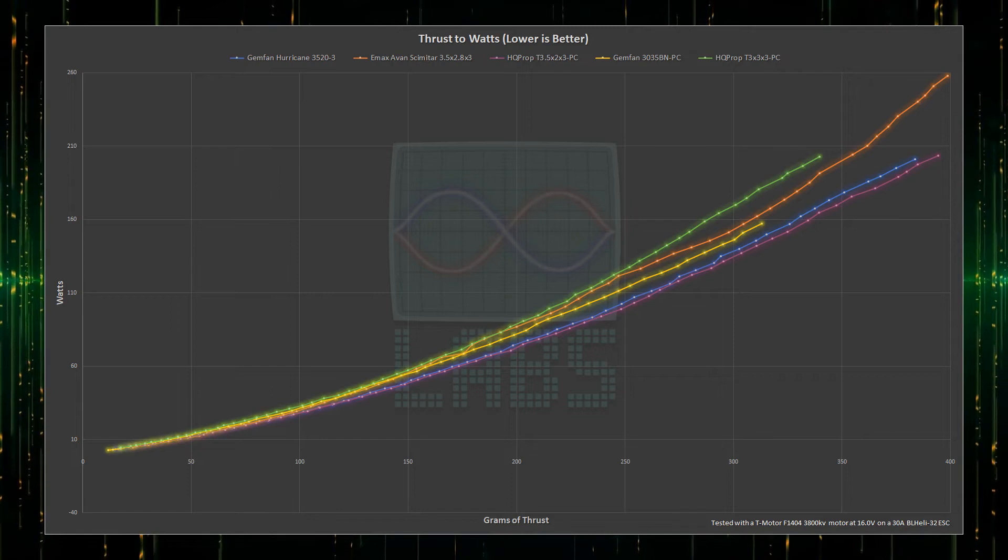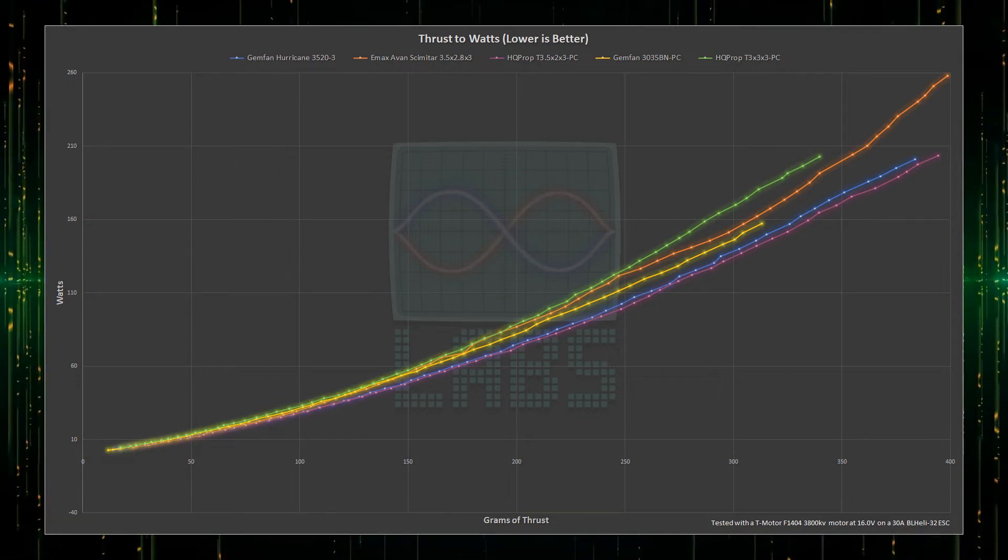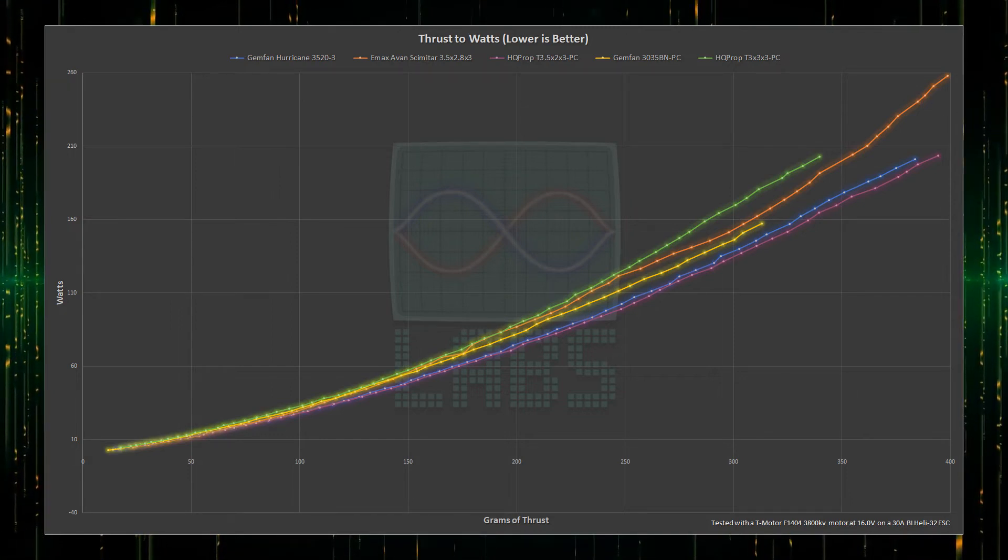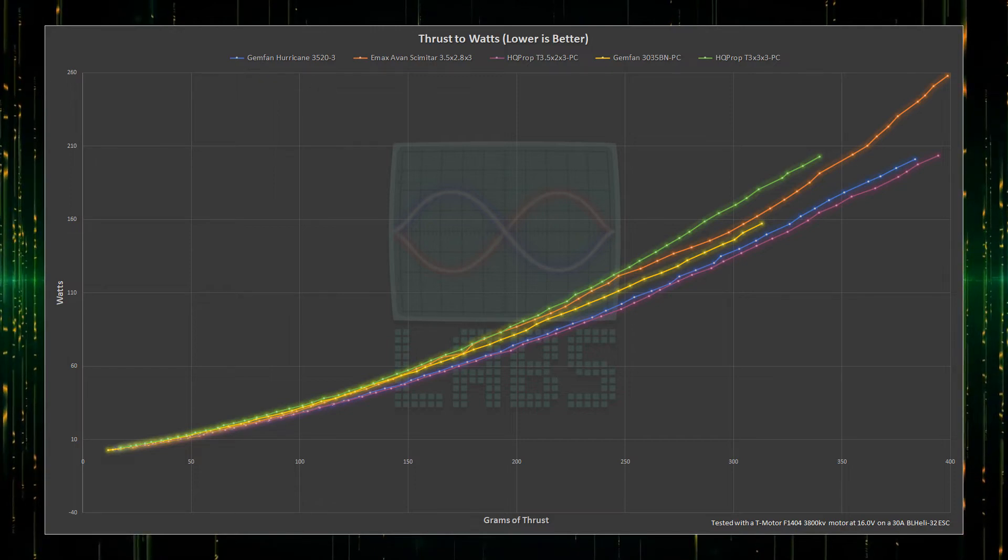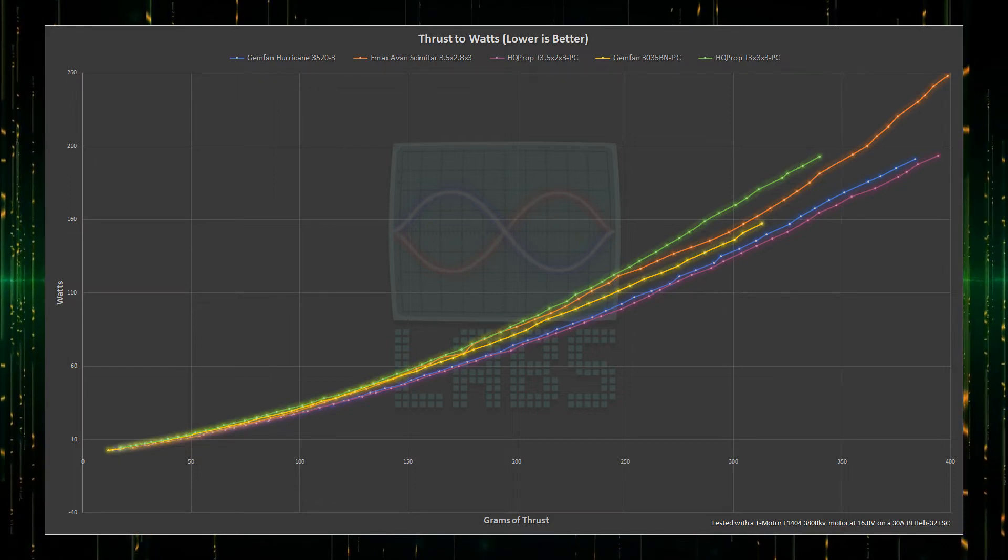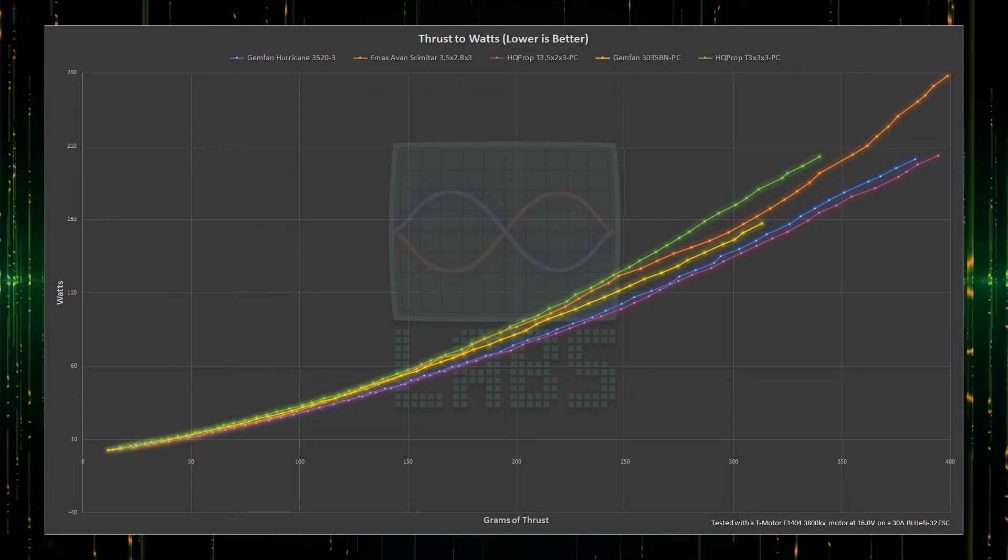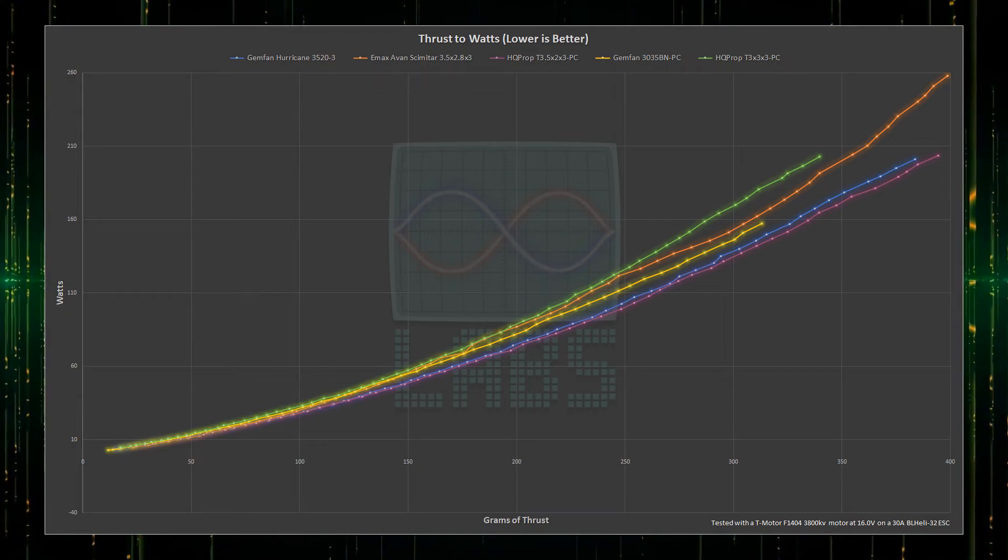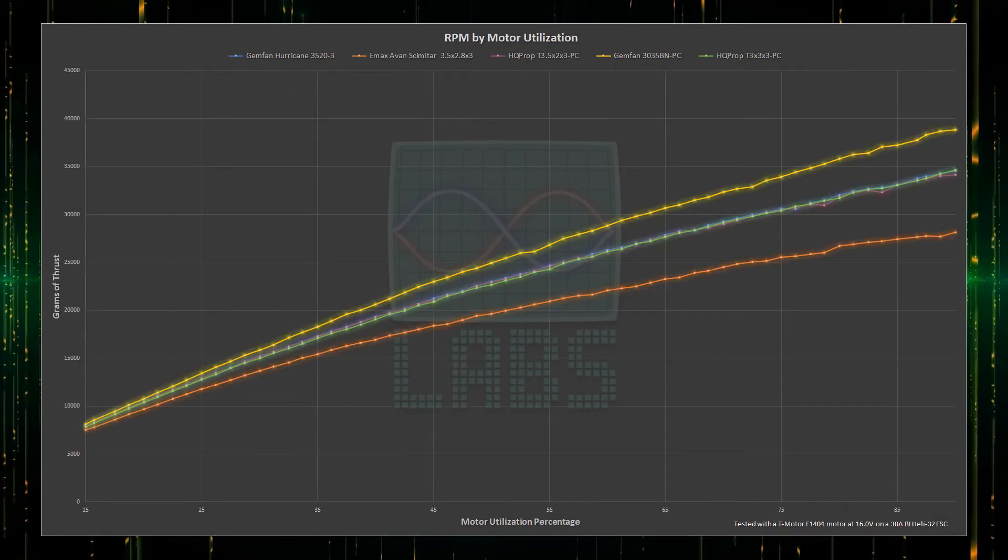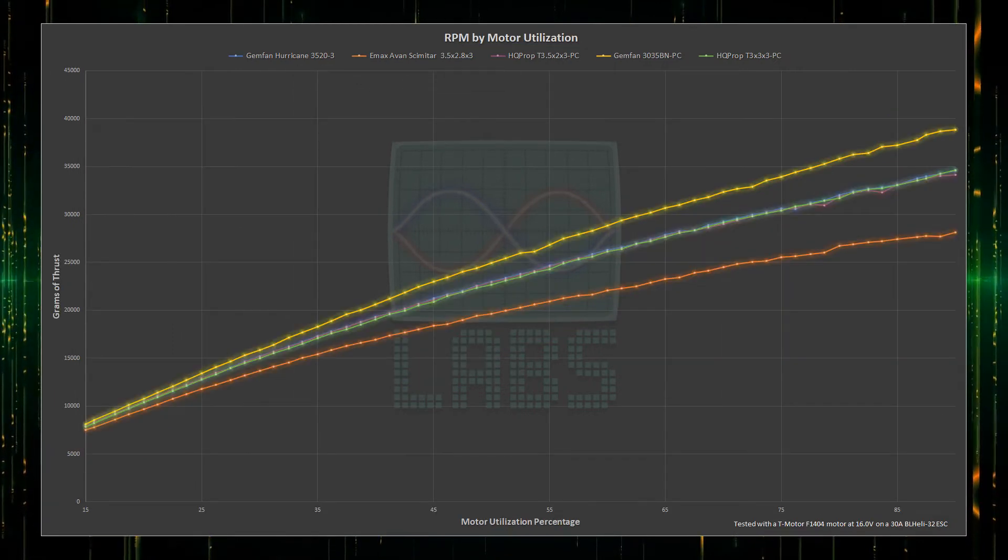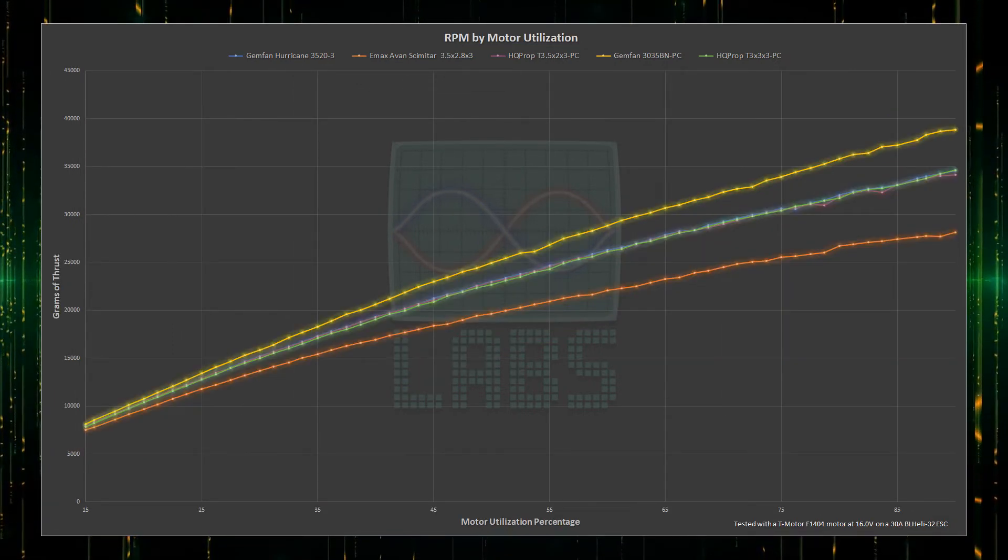The Avans are more efficient than the current 3-inch performance leader, but what you're seeing here is significantly less efficiency than the other 3.5-inch propellers, without gaining more than a few grams of top-end thrust. So it's not worth it. With that said, it's possible the Avans are just not appropriate for any 1404-size motor. And if we switch over to the RPM chart, you can see that the motor delivers far less RPMs across the throttle range, trying to fling them around.